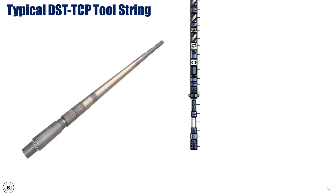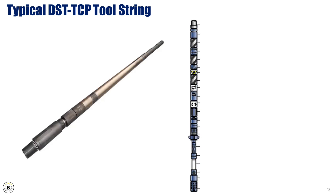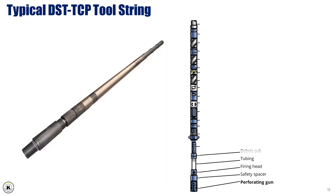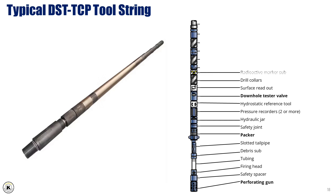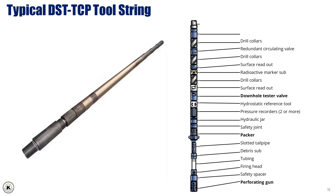A typical DST-TCP tool string is composed from bottom to top of: perforating gun, safety spacer, firing head, tubing, debris sub, slotted tailpipe, packer, safety joint, hydraulic jar, pressure recorders, hydrostatic reference tool, downhole tester valve, surface readout, drill collars, radioactive marker sub, surface readout, drill collars, redundant circulating valve, drill collars, slip joints, and finally tubing or drill pipes.